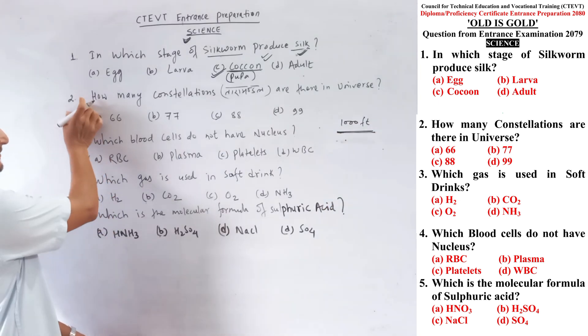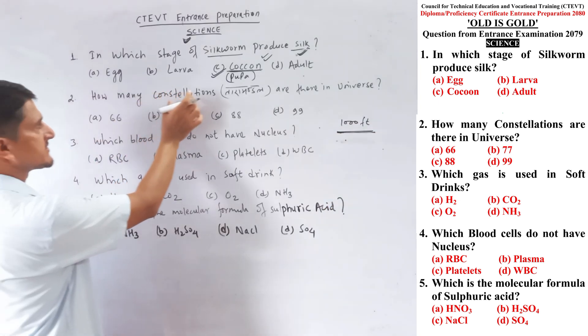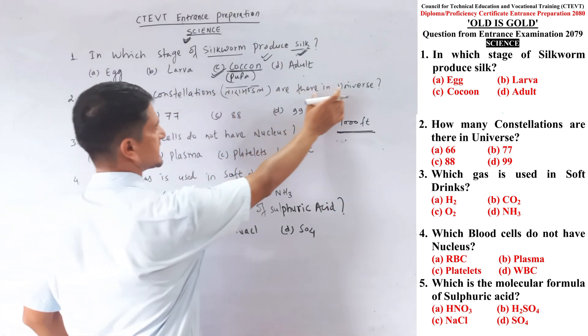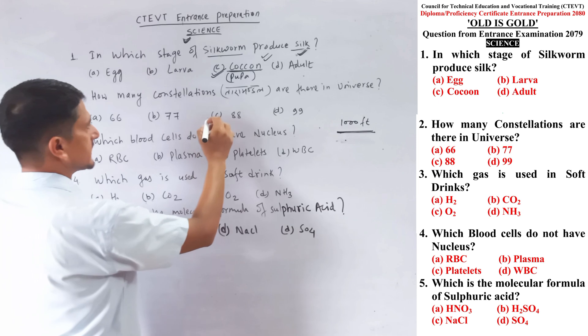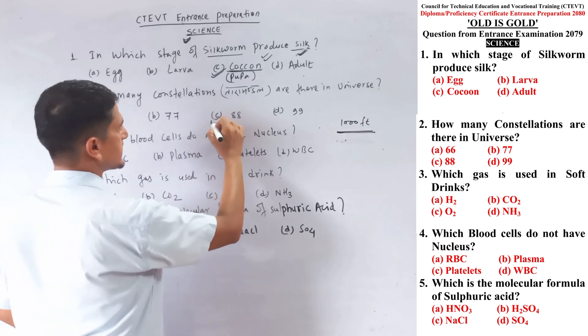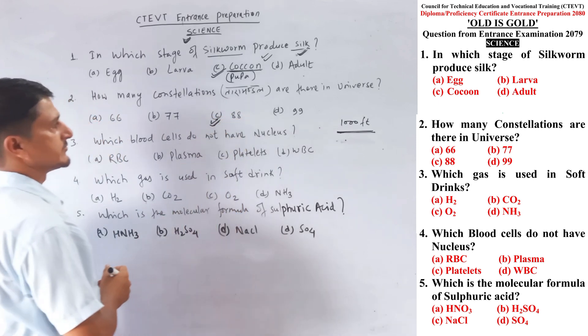Question number two: how many constellations are there in the universe? There are 88 constellations in the universe.